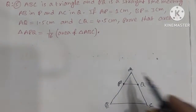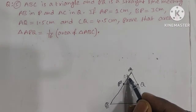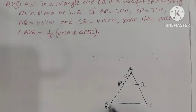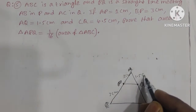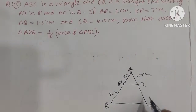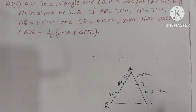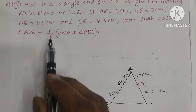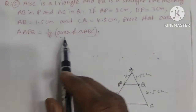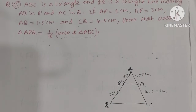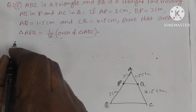We need to prove that area of triangle APQ equals 1/16 of area of triangle ABC. First, we verify the given conditions. AP = 1 cm, BP = 3 cm, AQ = 1.5 cm, CQ = 4.5 cm.